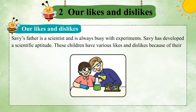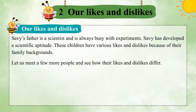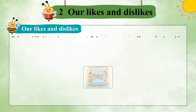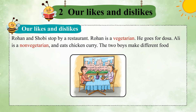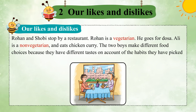These children have various likes and dislikes because of their family backgrounds. Let us meet a few more people and see how their likes and dislikes differ. Rohan and Shobi stop by a restaurant. Rohan is a vegetarian and goes for dosa. Ali is a non-vegetarian and eats chicken curry. The two boys make different food choices because they have different tastes on account of the habits they have picked up from their families.